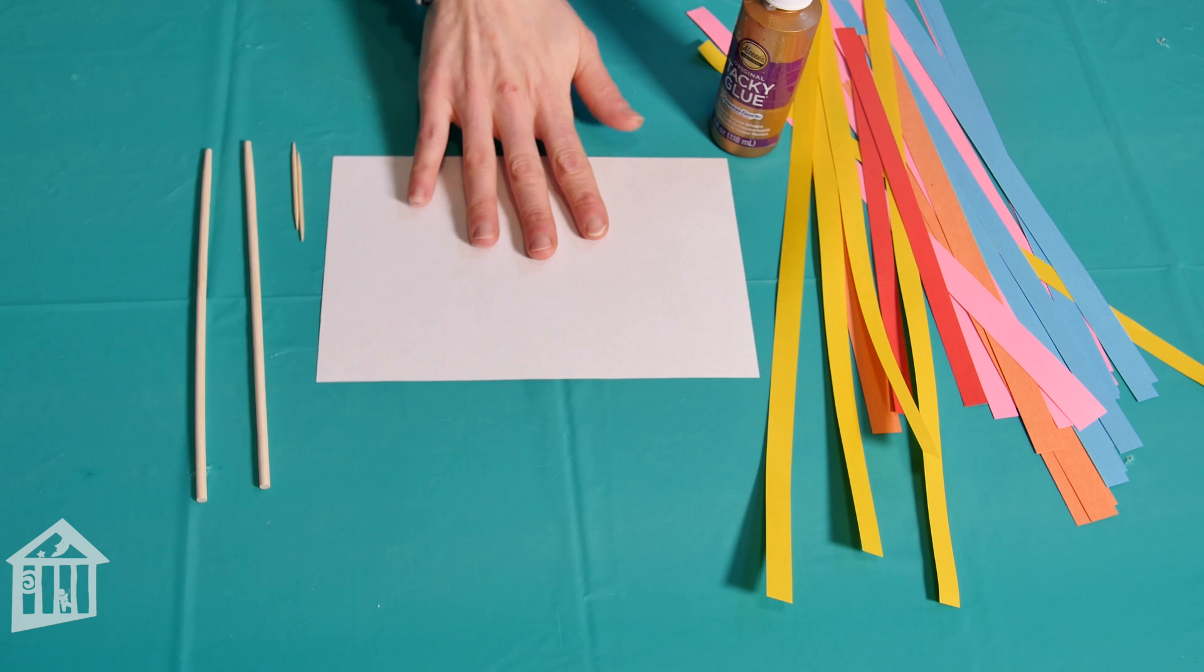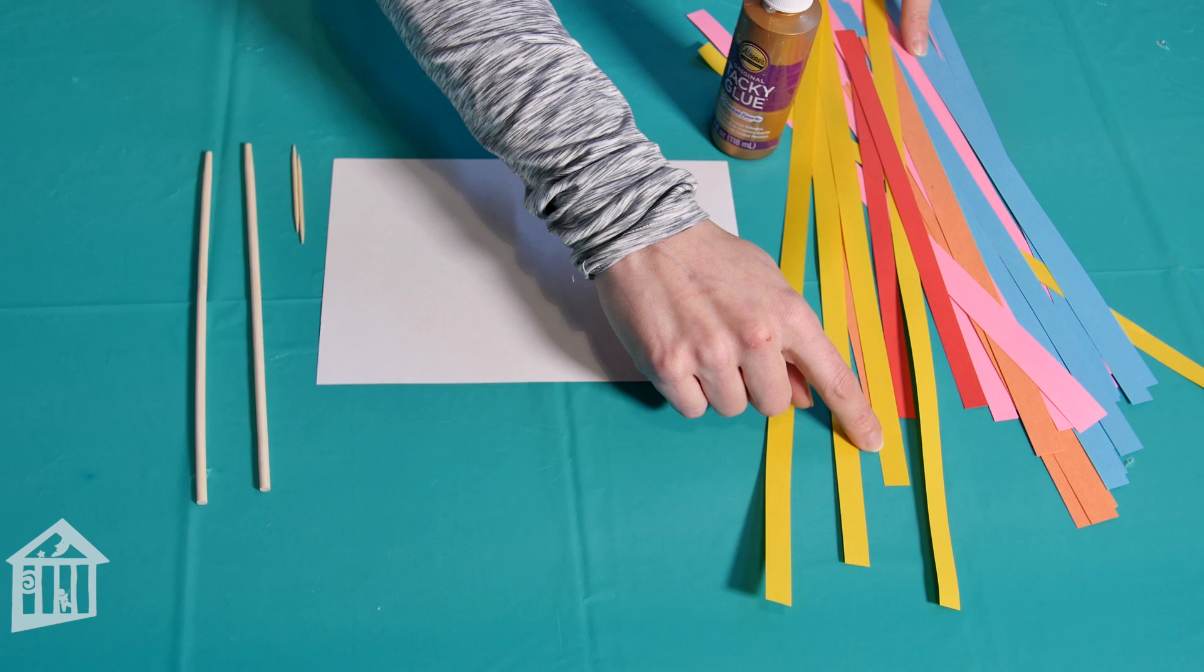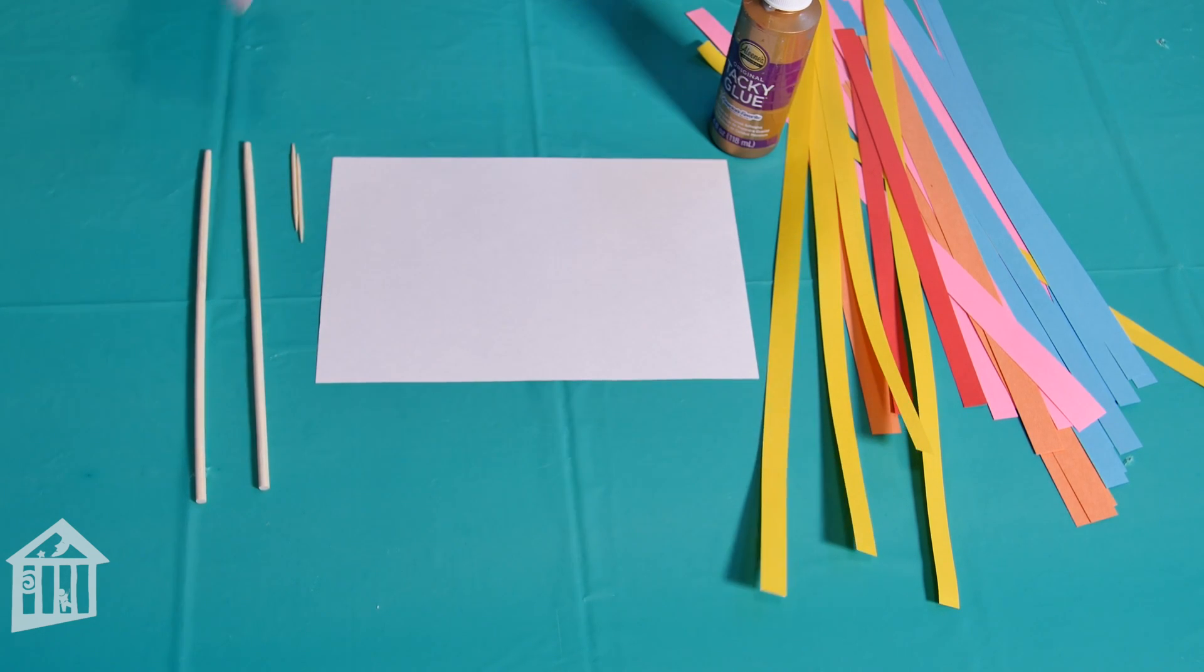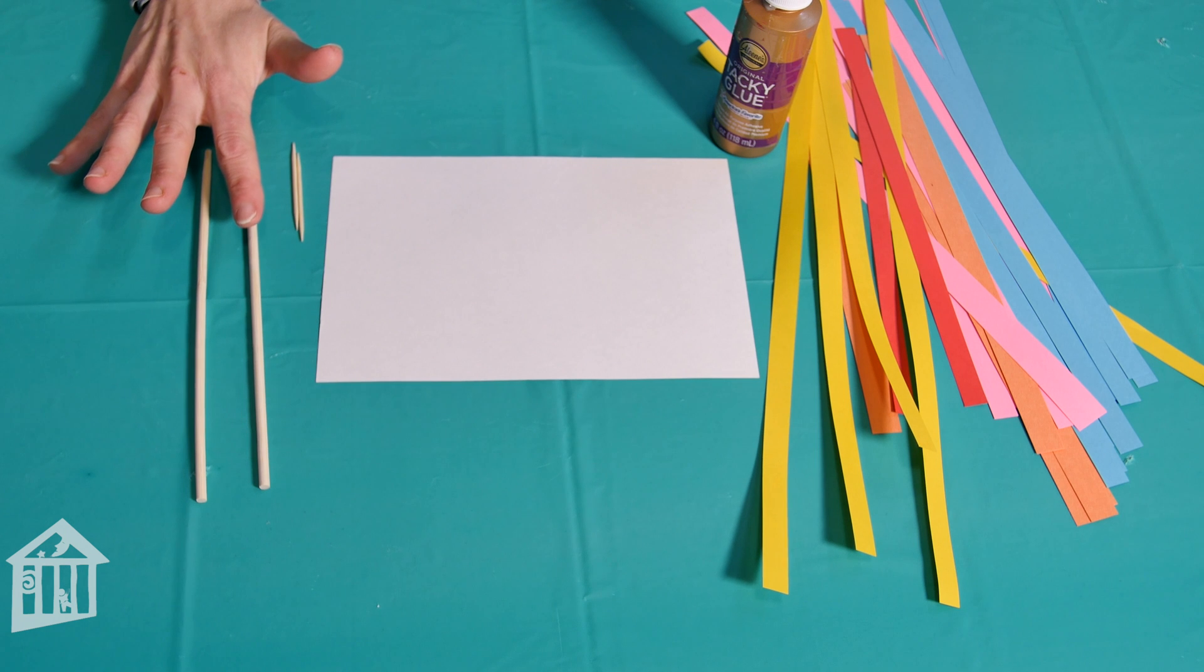For this activity you'll need a half sheet of paper or cardstock, thin strips of colorful paper and you only need your strips to be about a half an inch wide, something that you can wrap your paper around.